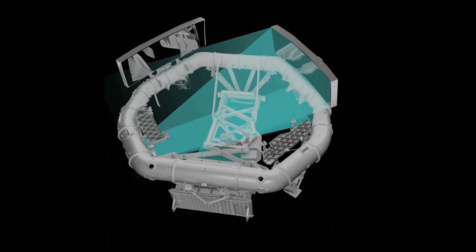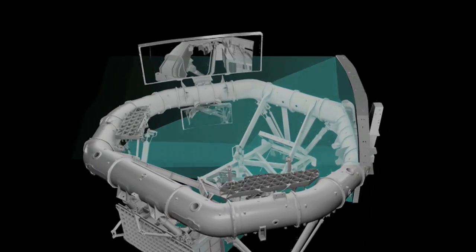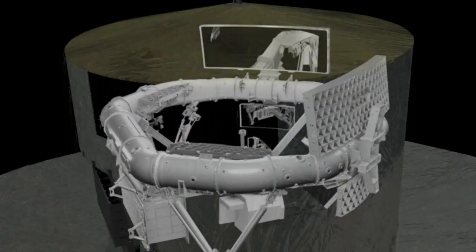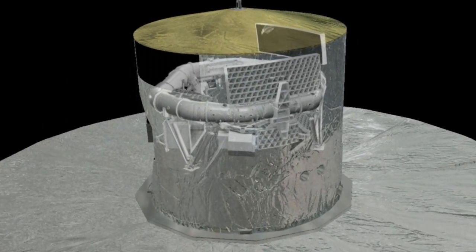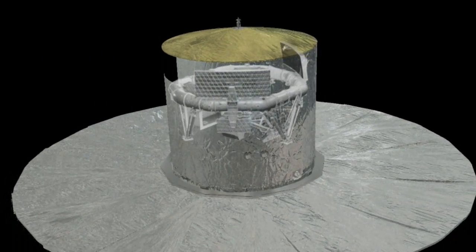And the radio velocity spectrometer will provide astronomers with spectra of the star in order to determine how fast it is moving towards or away from us.